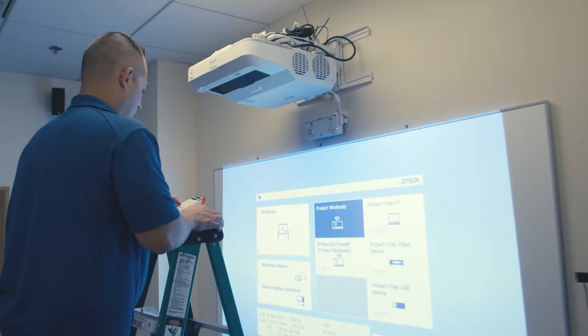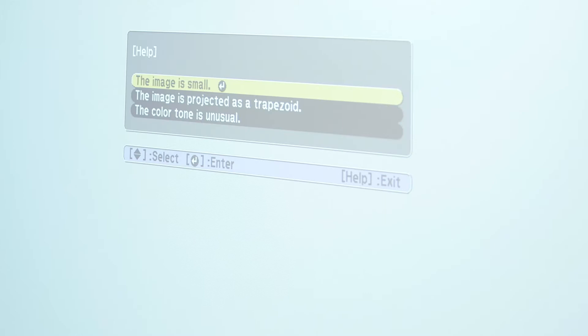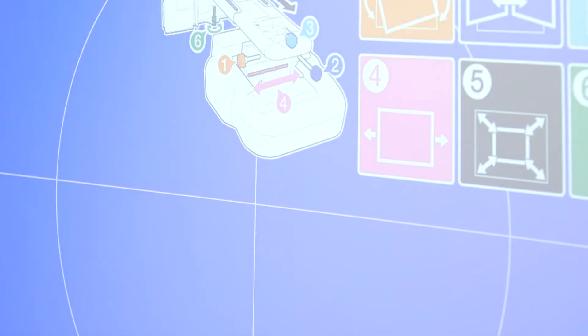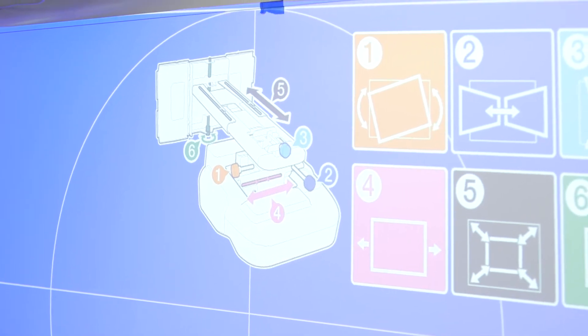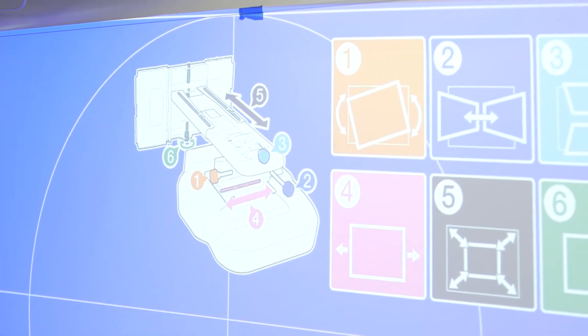With the projector focused, you can now access the on-screen help with the remote by pressing the menu button, followed by settings and installation guide. Once it is displayed, you can use the instructions to adjust the roll, pitch, and yaw.